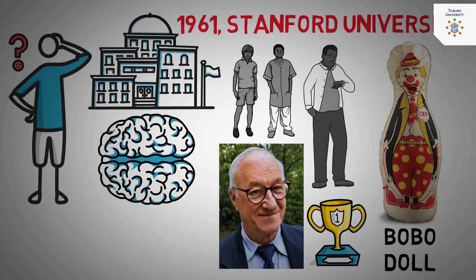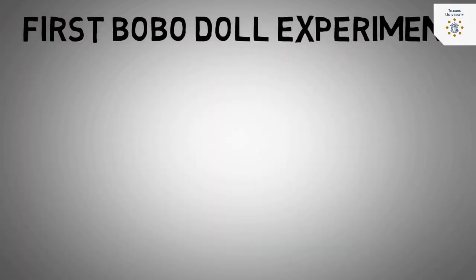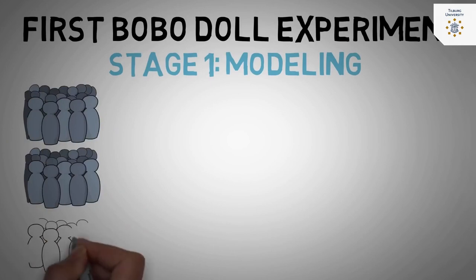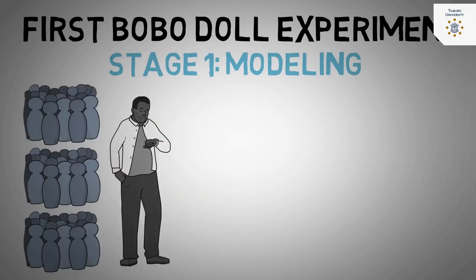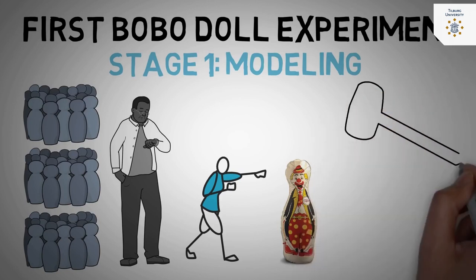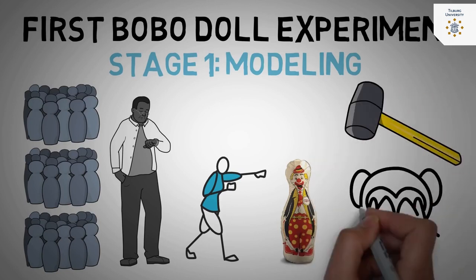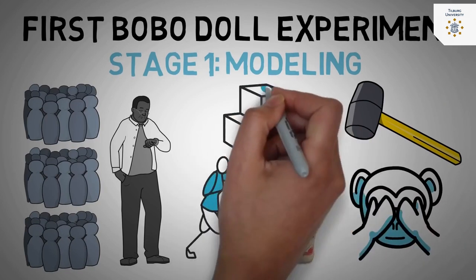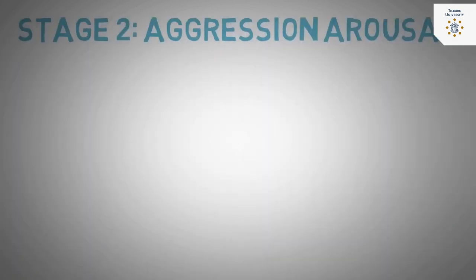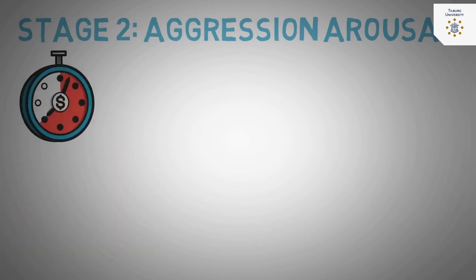In the Bobo doll experiment, Bandura placed children in a room with an adult, some toys, and a five-foot inflatable Bobo doll. The experiment had three stages: modeling, aggression arousal, and a test for delayed imitation. In stage one, one group observed an adult punching the Bobo doll repeatedly with harsh, aggressive language. A second group observed the adult playing non-aggressively with blocks or coloring. A control group was also included.